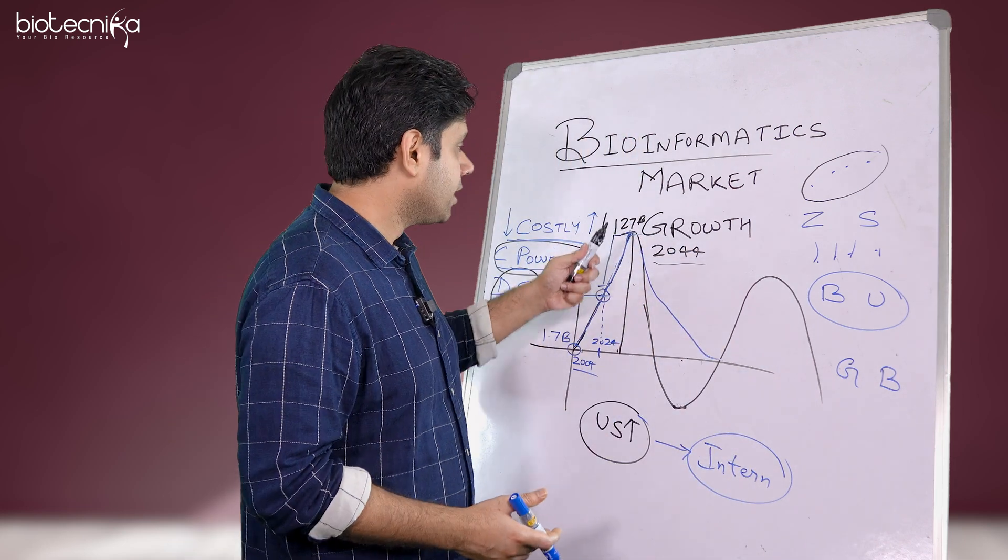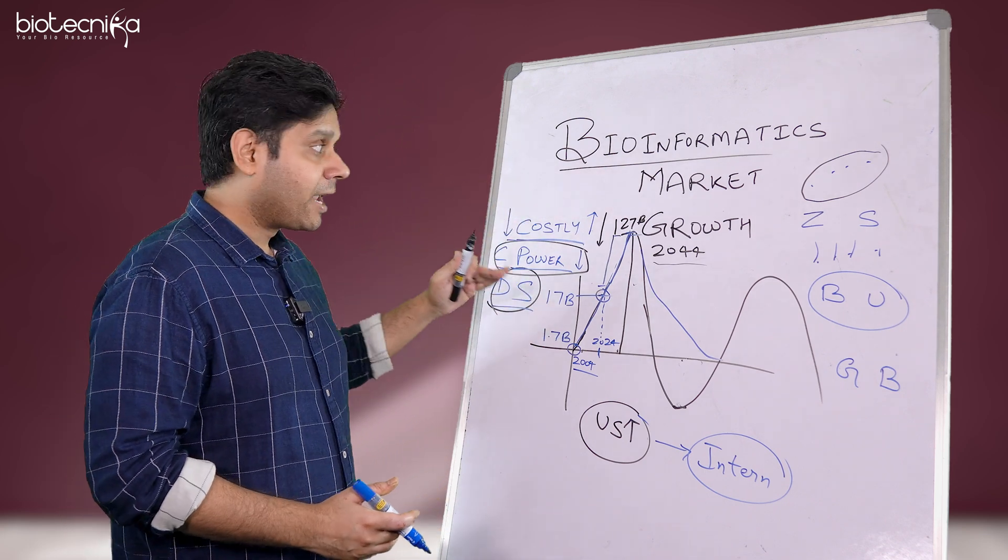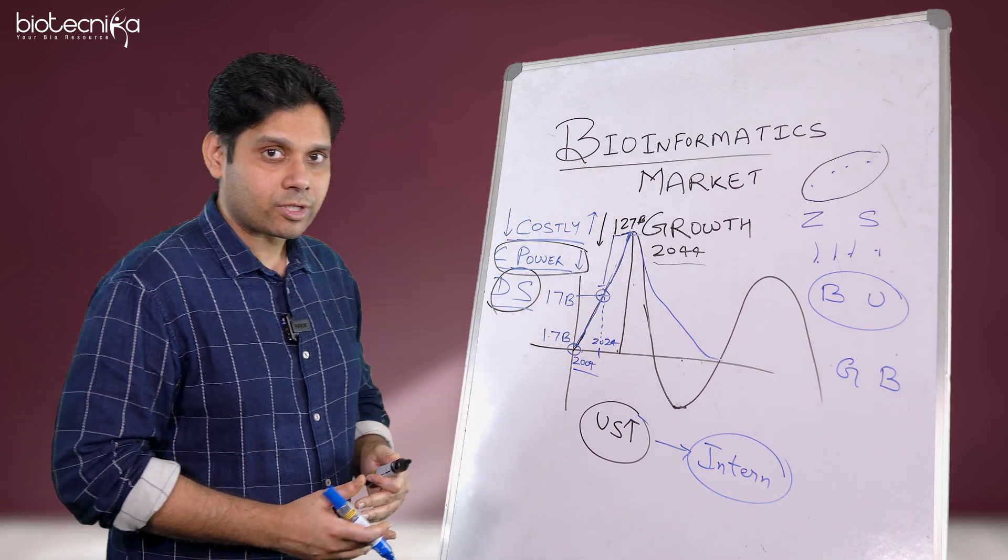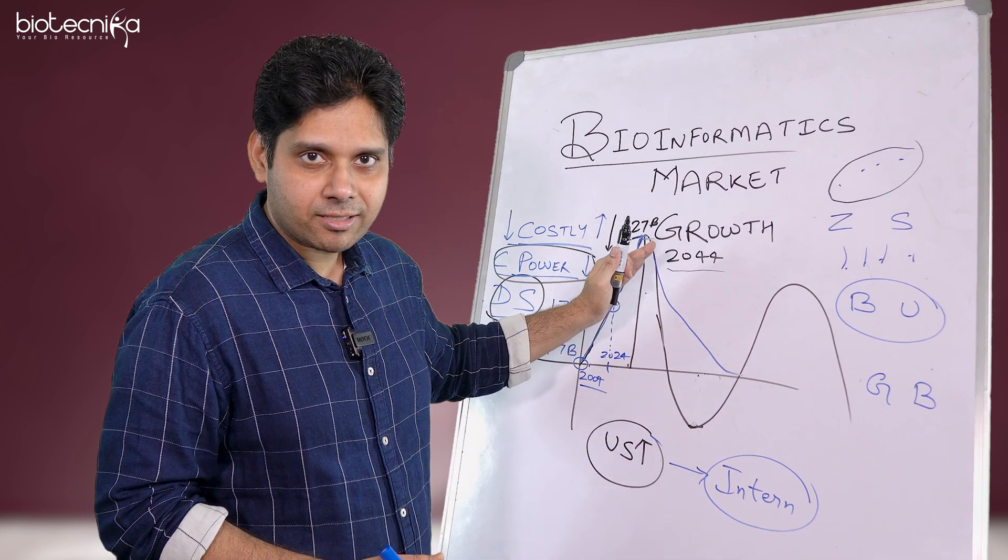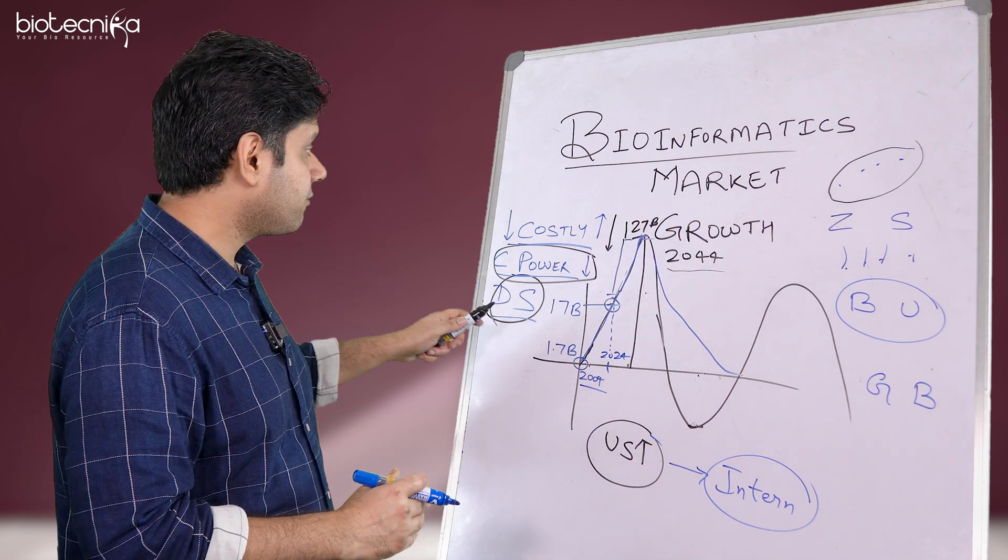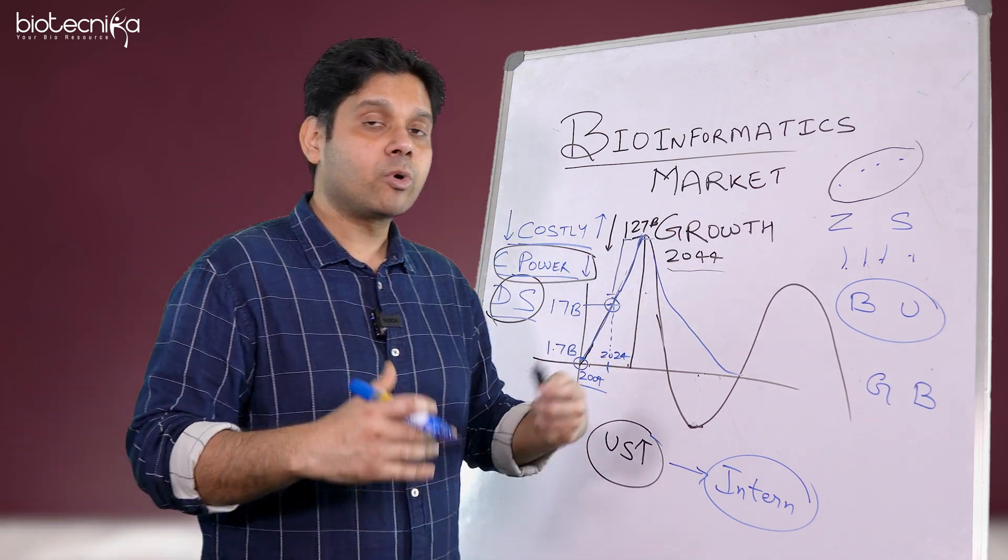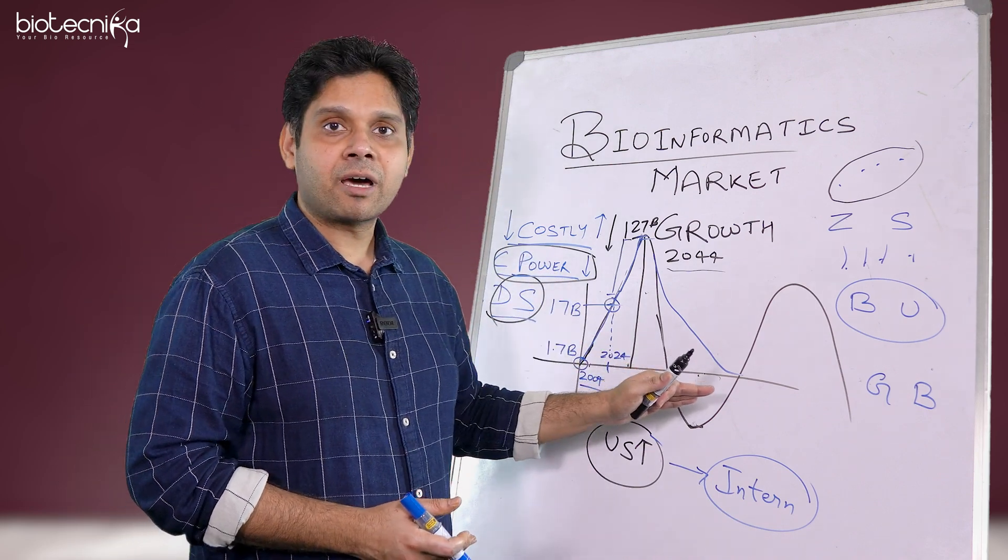So basically today the prices of holding high powered computers is lesser than what we used to expect. So $15 per hour I was talking about. So yes, this is where the price is going down. The computing power is going up and then we have better data storage devices. So we are seeing a boom of bioinformatics, AI ML in the next 20 years, which will continue given that if the quantum computing comes in and more data storage, better data storage comes in and we will win this market definitely.